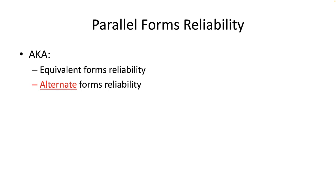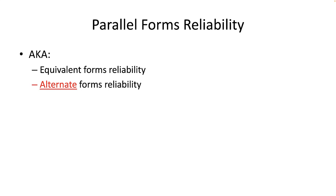Parallel forms reliability — also known as alternate forms or equivalent forms reliability — requires the creation of two conceptually identical tests administered to the same respondents almost back-to-back. These two versions can be difficult to construct, but in educational and cognitive ability testing it is done quite often. The main difference from test-retest is that parallel forms reliability correlates scores on two different but conceptually identical instruments, while test-retest uses the exact same instrument both times.